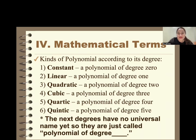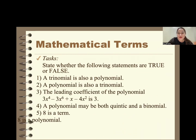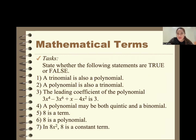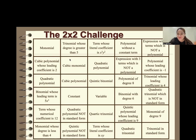Now we have a quiz. You will answer items 1 to 8 as true or false and submit in our Google Classroom. The questions include: A trinomial is also a polynomial. A polynomial is also a trinomial. The leading coefficient of 3x to the 4th minus 3x squared plus x minus 4x squared is 3. A polynomial may be both quintic and binomial. 8 is a term. 8 is a polynomial. In 8x squared, x is a constant term. And x squared y plus xy minus y squared is a polynomial. After the quiz, complete the performance task — a 2x2 bingo card — by giving your own examples such as a monomial, and submit in Google Classroom.